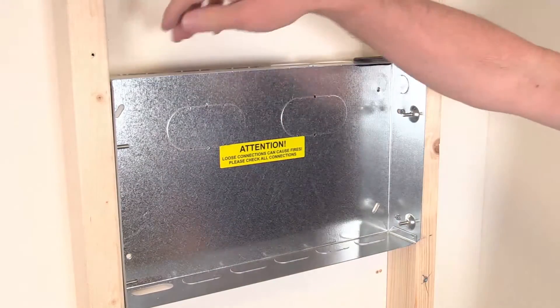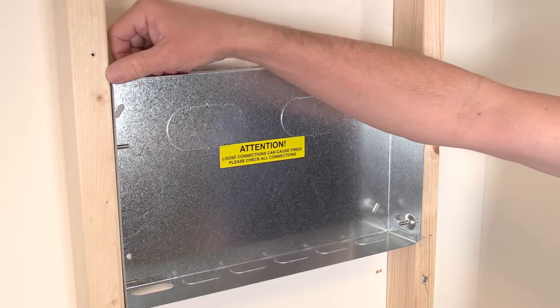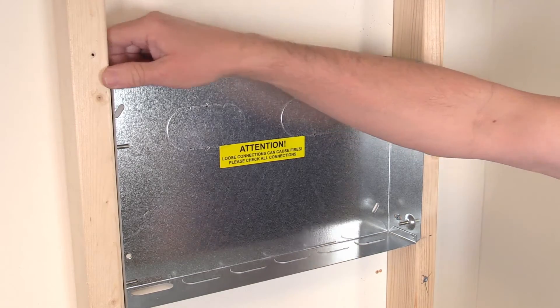The top and bottom edges can sit up to 20 millimeters back from the stud work and the enclosure will still be able to be fitted.